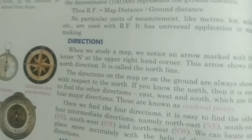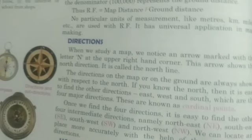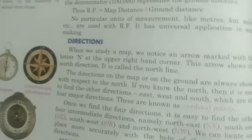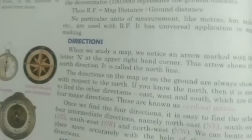Usually a magnetic compass is used to find direction. We all know that the sun rises in the east and sets in the west — if we stand facing the sun in the morning, we are facing east and the west is toward our back. Similarly, on a cloudless night the pole star can show the north direction, and then the other main directions can be found out.